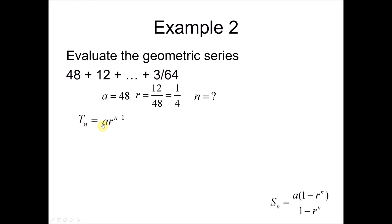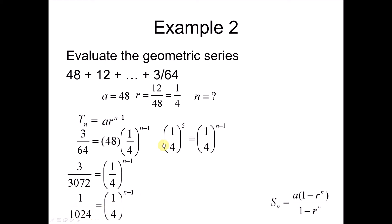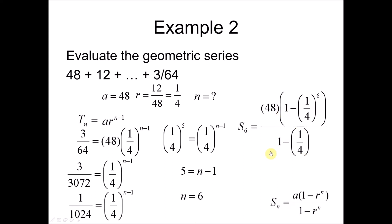Using the formula tn equals ar to the power of n minus 1, where tn is the last term 3/64, we substitute a equals 48 and r equals 1/4. Simplifying gives 1/4 to the power of n minus 1 equals 1/1024. Since 1024 equals 4 to the power of 5, we write 1/1024 as (1/4) to the power of 5. Comparing indices: n minus 1 equals 5, so n equals 6. Substituting into the formula gives S6 equals 48 times (1 minus (1/4)^6) divided by (1 minus 1/4), which gives 6560.